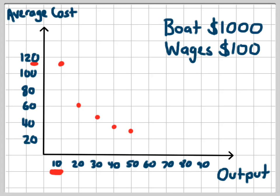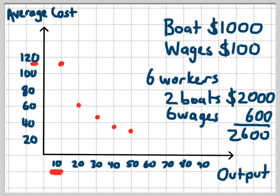Eventually this boat is going to be full and we said at the start that the boat holds five fishermen. When I get to my sixth worker I'm going to have to hire a new boat. So for six workers I'm going to need two boats and that's going to cost me $2,000. I'm going to have to pay six lots of wages which is $600 and my total cost is $2,600. When I divide that amongst the output which is 60, the average cost will be $43.